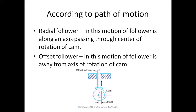The next category is according to the path of motion. There are two types: radial and offset. In a radial FOLLOWER, the CAM axis and the FOLLOWER motion axis are in line. In an offset FOLLOWER, there is some eccentricity between the axis of the FOLLOWER and the axis of the CAM — this eccentricity is called the offset.